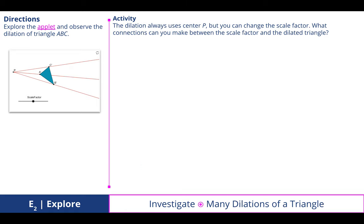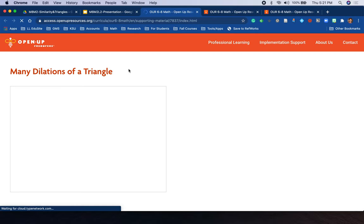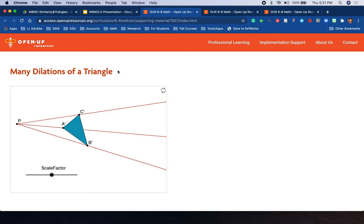Another great activity we investigated was many dilations of a triangle. A nice feature of this applet is it allowed you to explore that as the triangle dilated either larger or smaller, those vertices stayed on that ray. That re-emphasizes our understanding that as we dilate away from the center of dilation, it remains on those rays that connect through the vertices.